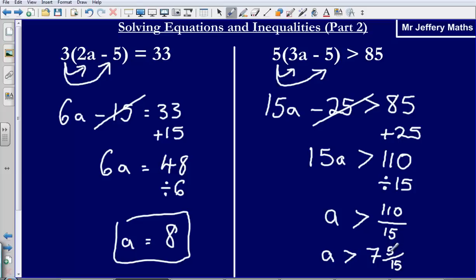I could then cancel down that 5 fifteenths, that fraction there, and I could say that that is the same as one third. So a is greater than 7 and one third.